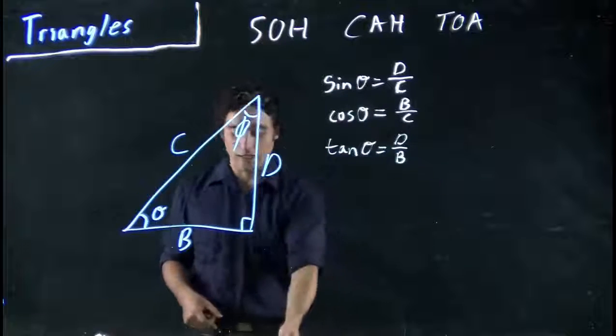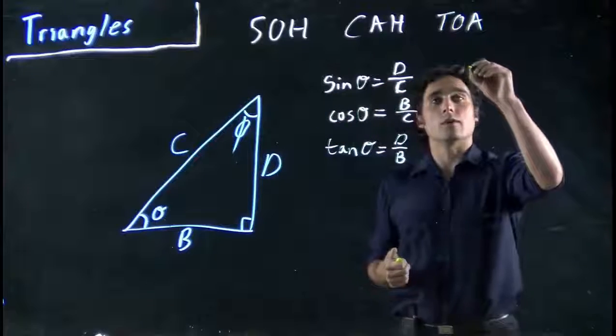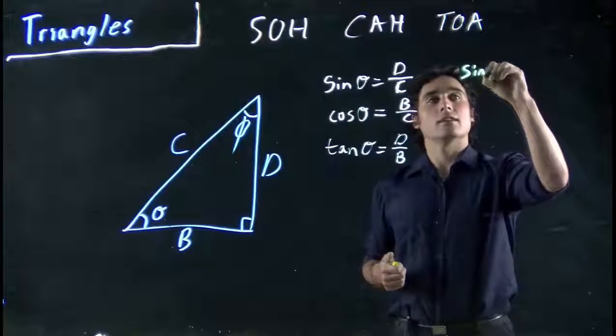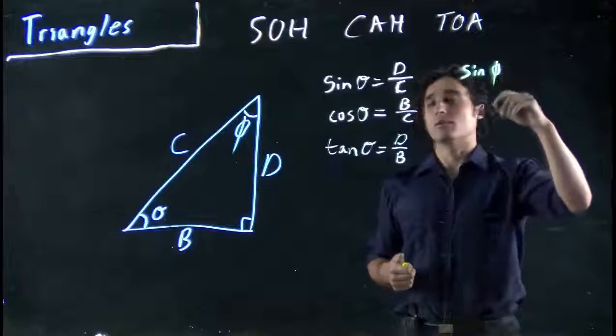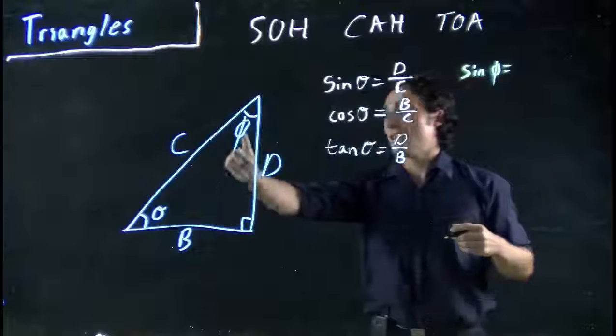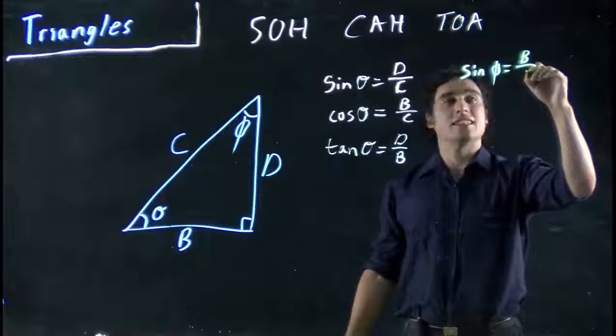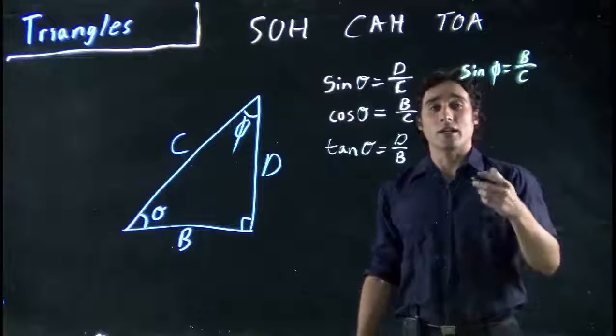We could also solve for the phi term. If we want, we can think sine of phi, this weird symbol, still is opposite over adjacent. This one's now the opposite, the B term. B over C. C is always the hypotenuse still.